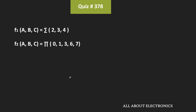All three functions are functions of three variables. We know that a function with three variables can contain at most eight minterms. Or if the function is in the product of sum form, then at most it can contain eight maxterms. This function f1 is given in the sum of product form, and as you can see, it contains three minterms.